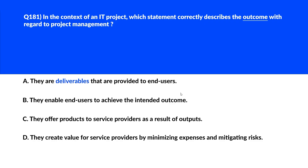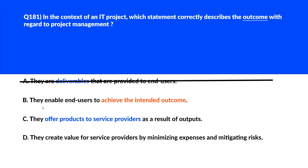This question is about outcomes. Option A says they are deliverables provided to end users. Deliverables are specific items produced as part of the project but are not the final desired outcomes themselves — incorrect choice. Option B says they enable end users to achieve the intended outcomes.